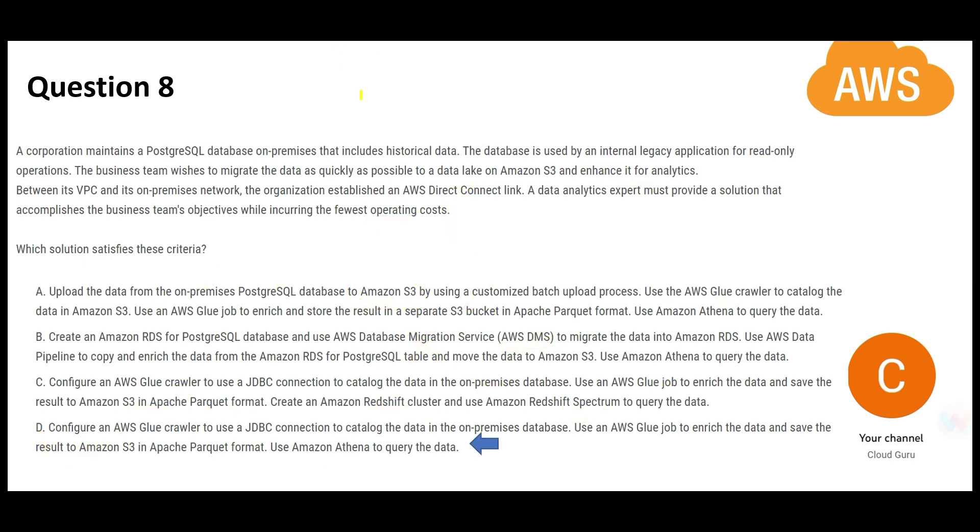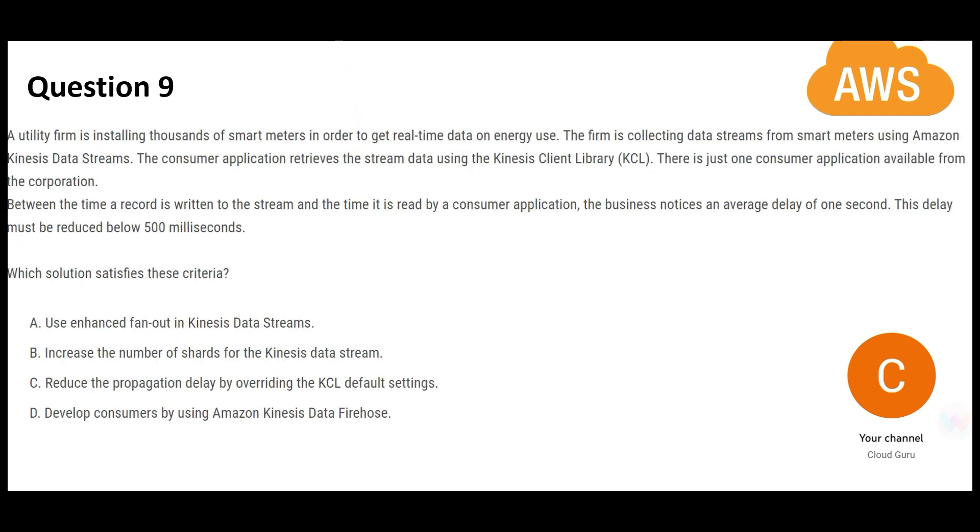Let us look at this question. This is a real-time streaming question. In real-time streaming questions, there is a producer. In this question the producer is an IoT device—these are smart meters—and there is a consumer. What is the consumer here? It is one consumer application. In between, you have data streams to stream the data, and then you are using KCL to retrieve the data. The consumer uses KCL to retrieve the data.